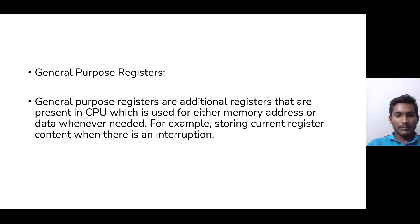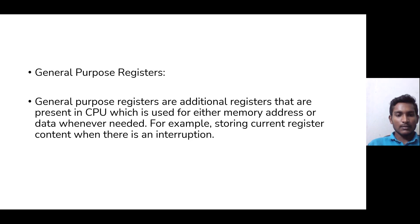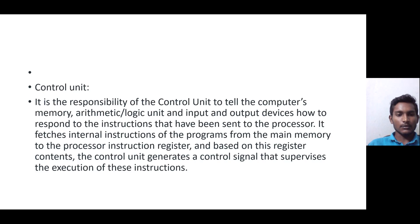General purpose registers are present in the CPU and are used for either memory address or data whenever needed — for example, storing current register content when there is an interrupt. General purpose registers are used to store data, and their main advantage is to retrieve data in an efficient manner.